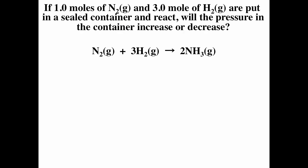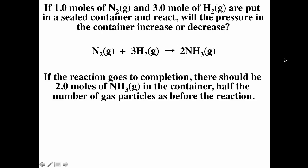If we look at this reaction, we have N2 plus 3H2 going to 2 moles of ammonia. A reaction is just a recipe — it does not tell us how much of the stuff we have, it just tells you what ratio we need. This reaction tells us that for every one mole of nitrogen, we need three moles of hydrogen, and we'd form two moles of ammonia if the reaction goes to completion. So the question is, if one mole of nitrogen and three moles of hydrogen were put in a sealed container and react, will the pressure in the container increase or decrease? Assuming the reaction goes to completion and all reactants are converted into products — for ideal gas law, the identity of the particles doesn't matter, all that matters is the number of particles. We start with four moles and we end with two moles, so the pressure should go down.